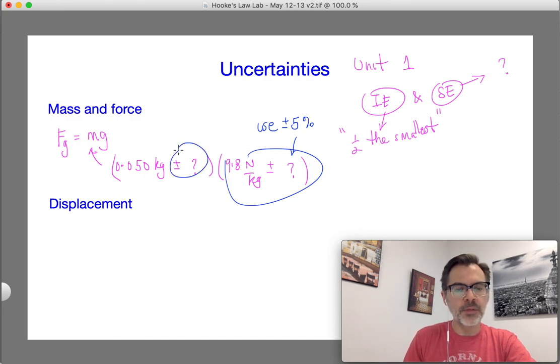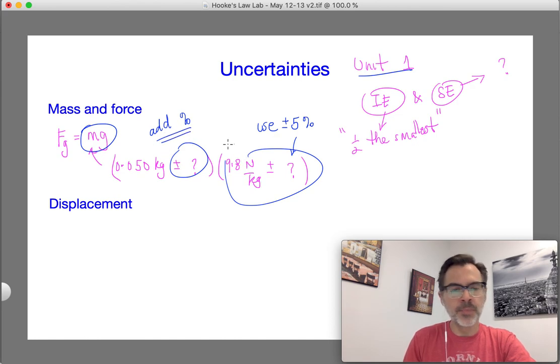But what are you going to use for the mass uncertainty? That's up to you. Remember in unit one when we learned how to deal with uncertainties, we learned that when you multiply values like mass and gravitational field, you add the percent uncertainty. So now you'll know what to do to get the uncertainty for each of your force measurements.